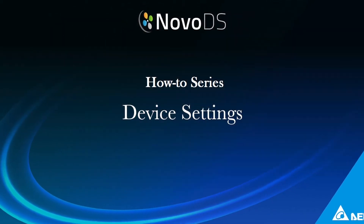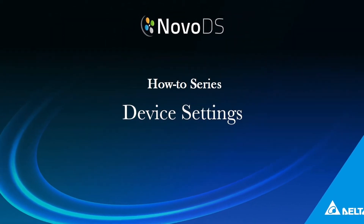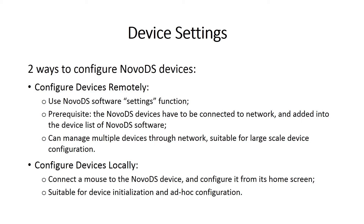Welcome to the Novo DS device settings tutorial. There are two ways to configure a Novo DS device: manually by connecting a USB mouse or keyboard to the Novo DS and navigating the home screen manually, or by using the Novo DS software over the network.